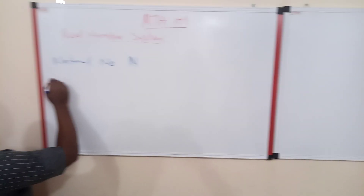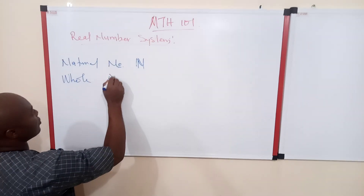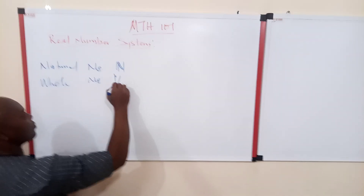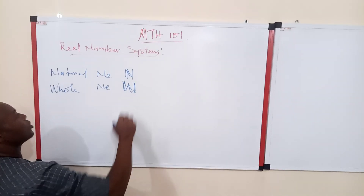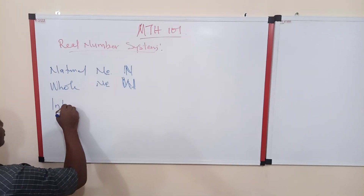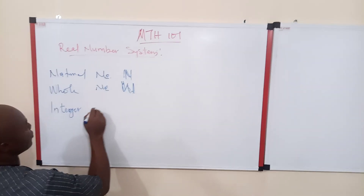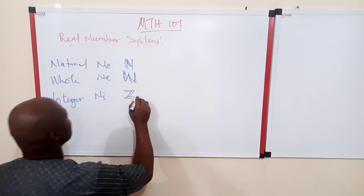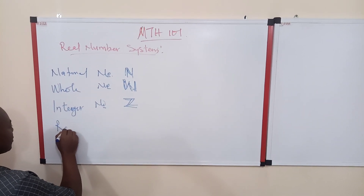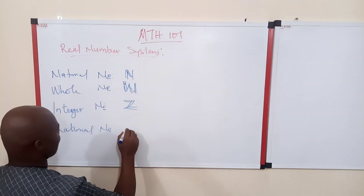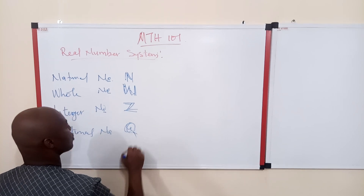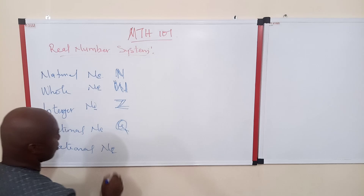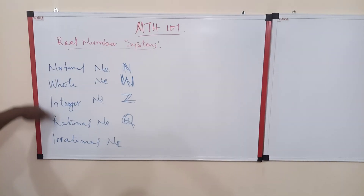We also have whole numbers, which we use W to denote. Then we have integer numbers, which we use Z to denote. We also have rational numbers, which we use Q to denote. And finally, we have irrational numbers. We can discuss real numbers in terms of these five different levels.